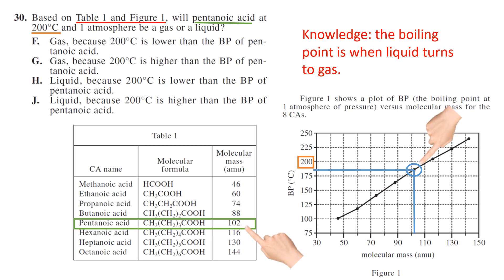Knowledge: the boiling point is when liquid turns to gas. So we expose it to 200 degrees Celsius temperatures, it will boil and turn to a gas. If nothing else, you can get rid of choice F and H because 200 degrees is not lower than the boiling point of pentanoic acid. We can see that it's below 200. 200 is above that. The pentanoic acid is below 200. It's right here. So it is going to be a gas, because 200 degrees Celsius is higher than the boiling point of pentanoic acid.